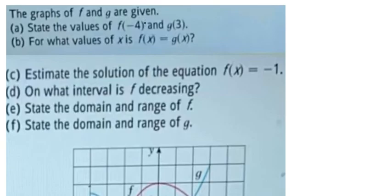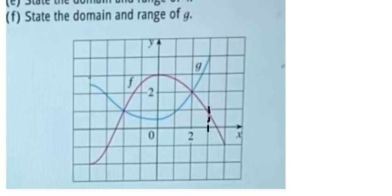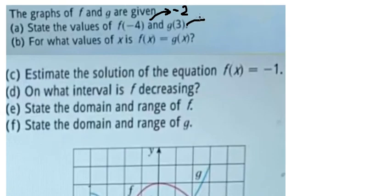We write negative two for that answer. Now for g of three — three is located here, and from this location we go to this point, which is about positive four. So the value of g of three is four. Question two: find the value of s such that f of s equals g of s.